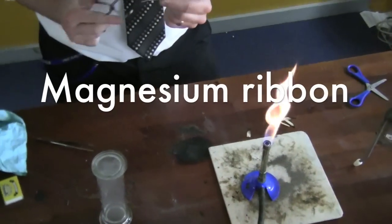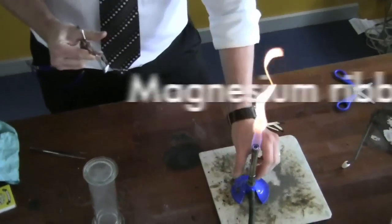Magnesium. Piece of magnesium ribbon. Tongs. And again, you're going to need a roaring flame.